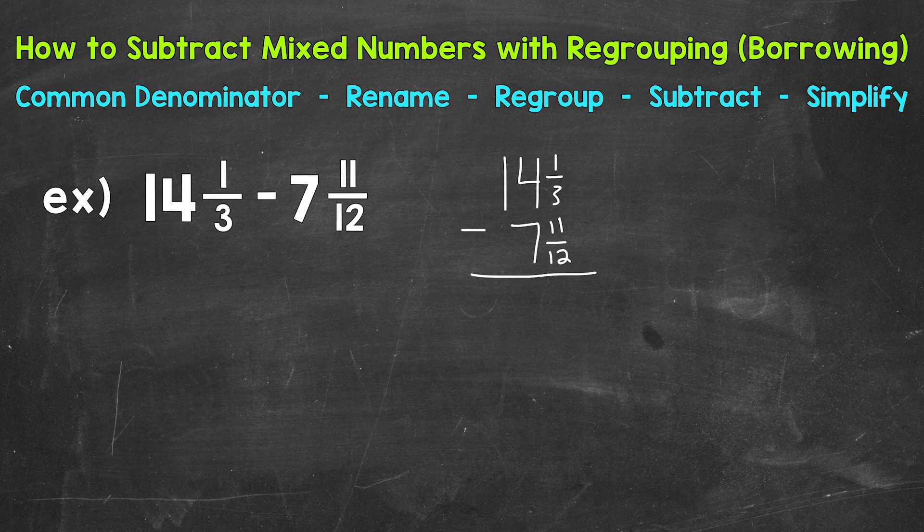Once we're lined up, we can subtract, and we're going to start by subtracting the fractions. So we have 1/3 minus 11/12. Now, we can't subtract quite yet because we do not have a common denominator. We have to have the same denominator there in order to subtract.